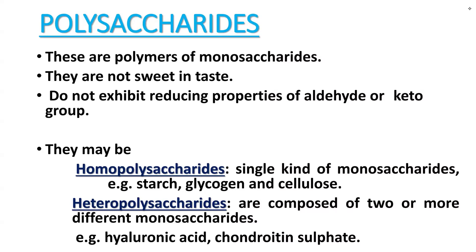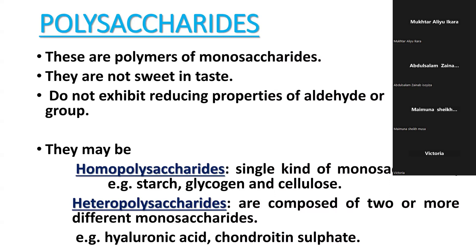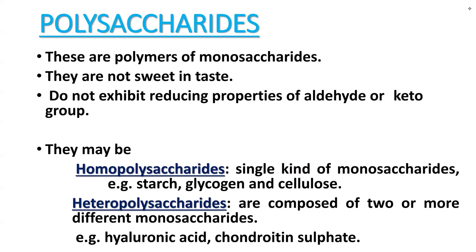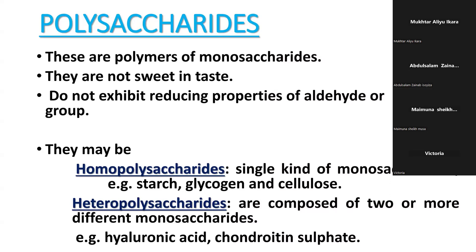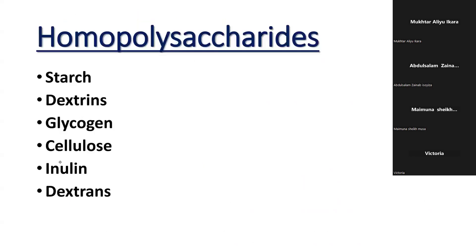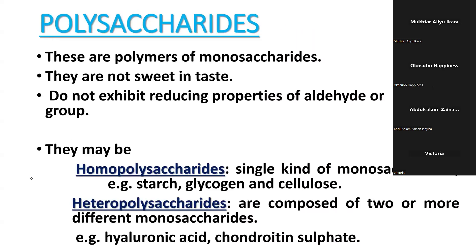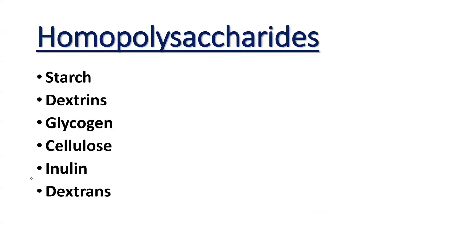Some men are infertile because they lack an active form of the hyaluronidase enzyme. As a result, the sperm cell cannot penetrate into the egg cell of the woman, making fertilization impossible. So hyaluronic acid is an example of a heteropolysaccharide.